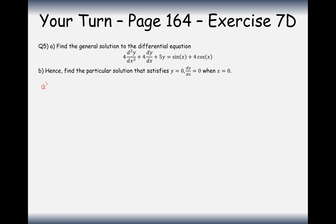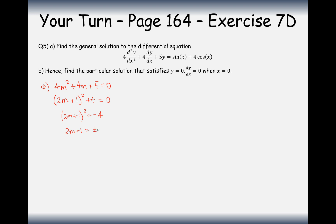Let's work through question 5A. The auxiliary equation is 4m squared plus 4m plus 5 equals 0. Completing the square gives (2m plus 1) squared plus 4 equals 0, so (2m plus 1) squared equals minus 4. Taking the square root: 2m plus 1 equals plus or minus 2i, giving m equals minus one half plus or minus i.